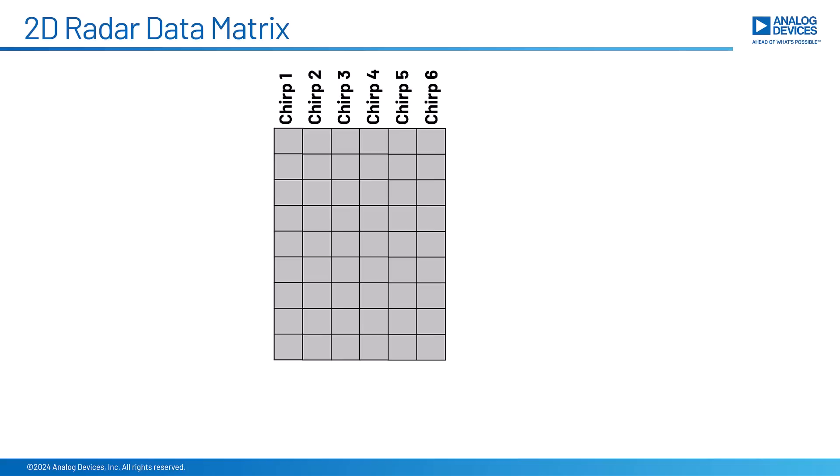So we have our six chirps, and it gives us this 2D matrix of data. The matrix is n rows by m columns, where n is the number of data points per chirp, and m is the number of chirps. So that matrix goes from zero to n minus 1, and then from zero to m minus 1. So for us, m is 6, and as shown here, n is 9.